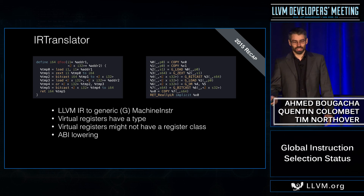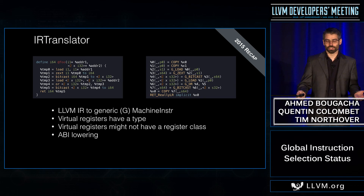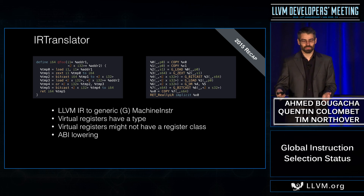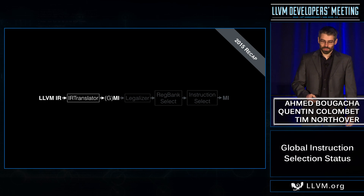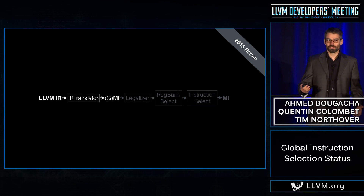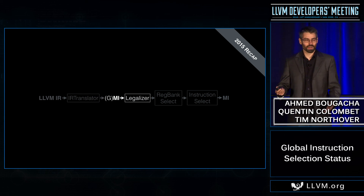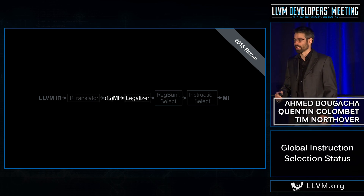That's about it for the IR translator. The other instructions are just a one-to-one translation in this example, but it could be a one-to-many. So now that we are in this machine representation, we want something that's more amenable for the target. To do that, we need to legalize the representation — and this is the job of the next pass, the legalizer.